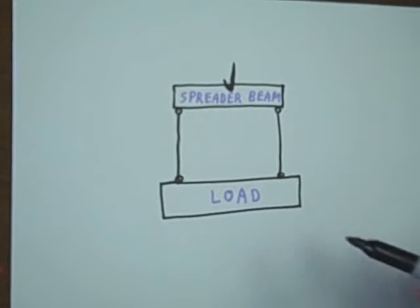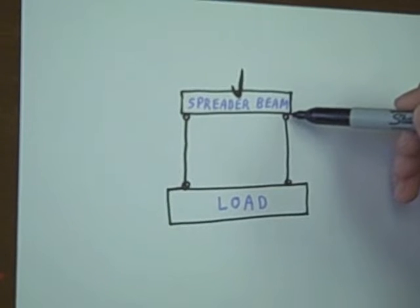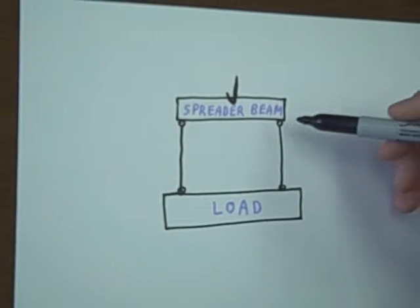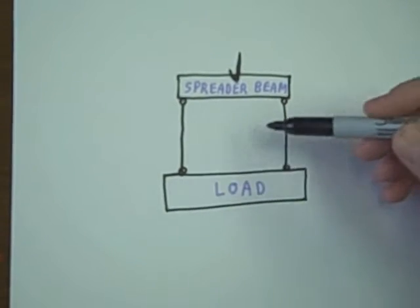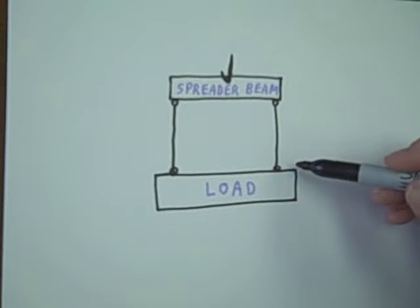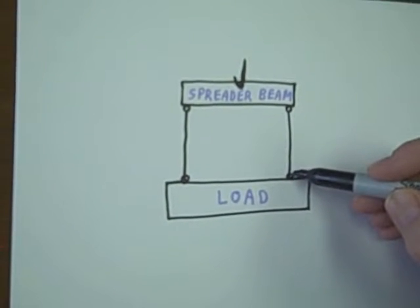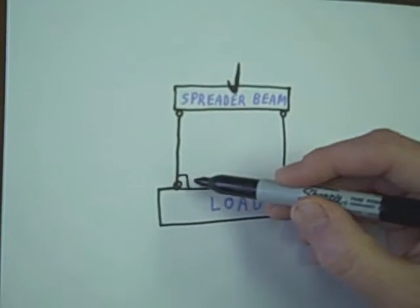In this example, there is a hook connected to a spreader beam. The spreader beam is connected to the load with two vertical straps. 90 degrees, 90 degrees.